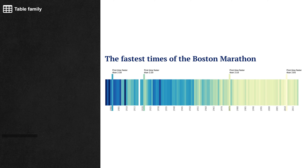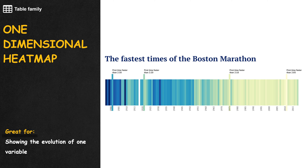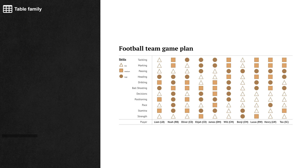When a heat map only has one axis to zoom in and focus on the evolution of that variable, we have the one-dimensional heat map. When a table is formatted in creative ways to represent more dimensions, we have the matrix diagram.